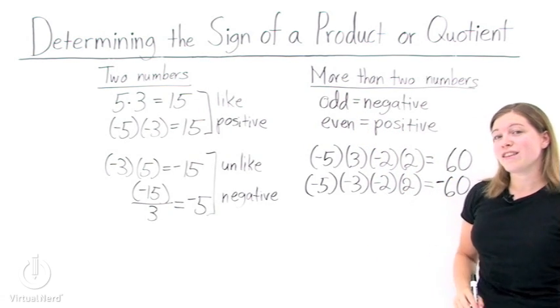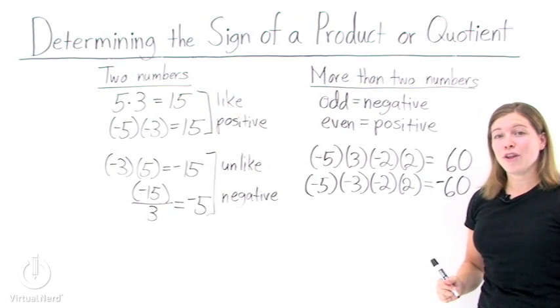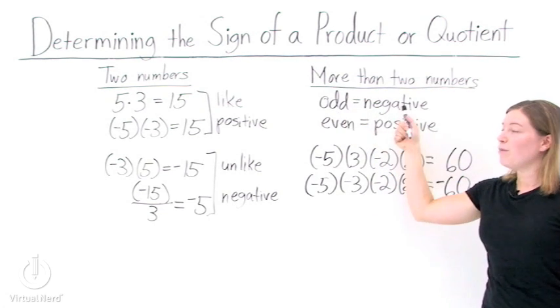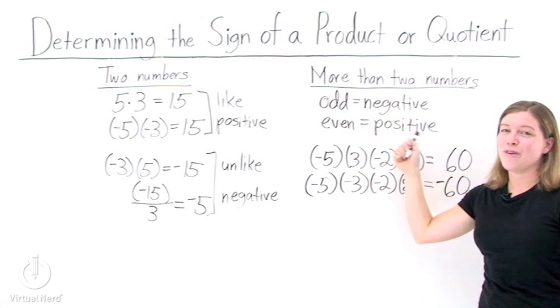So, when determining the sign of a product or quotient, just remember, count the number of negatives. Odd, you have a negative answer. Even, you have a positive answer.